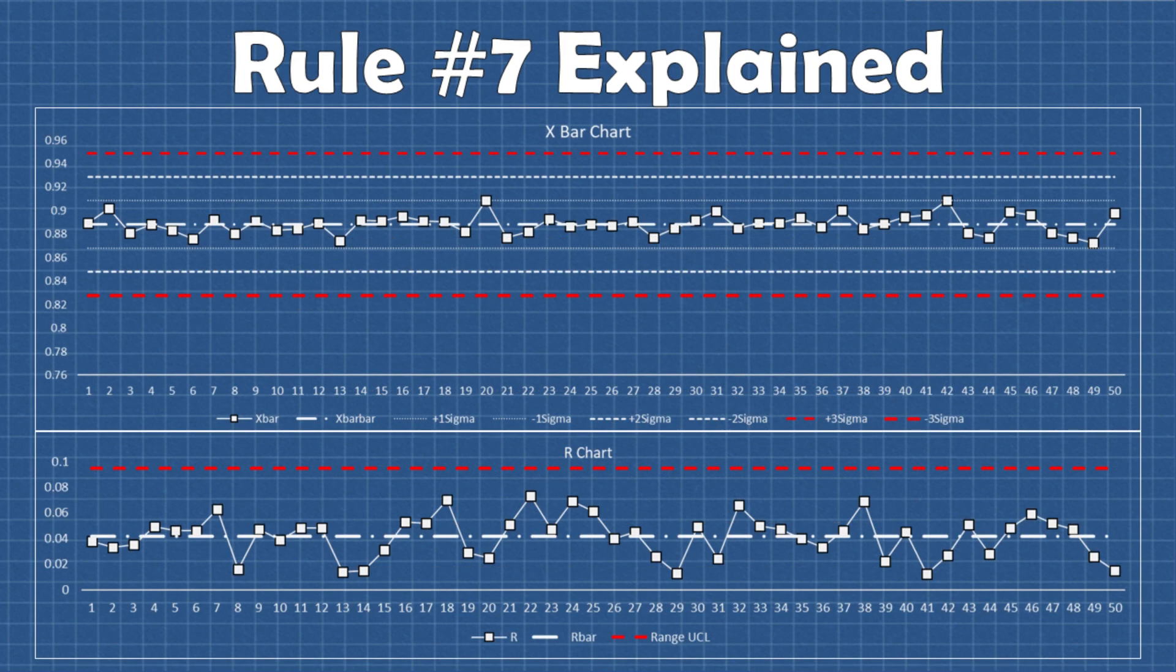So to explain this further let's look at an example. Here's an X bar and R chart with a subgroup of four monitoring a plastic molding process. Everything looks to be in control except using rule number seven we can see that something fishy is going on here.